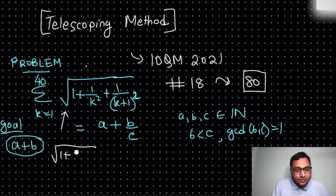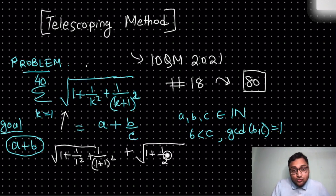1 plus 1 by 1 squared plus 1 by (1+1) squared, plus square root of 1 plus 1 by 2 squared plus 1 by (2+1) squared, and you keep on doing this until you reach 40. So until you reach k equal to 40.